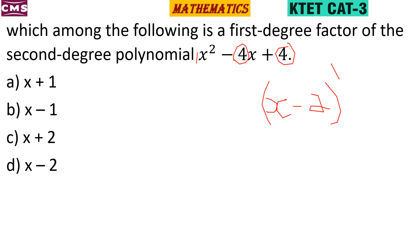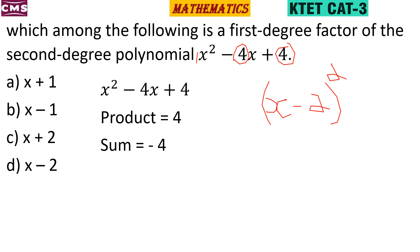x minus 2 is the factor. x-2 are factors. The product is 4 and the sum is minus 4, so we can use this to factorize. We have to discuss the factorization of the second degree question — x²-4x+4.